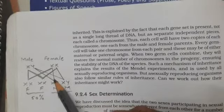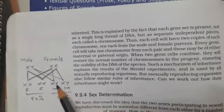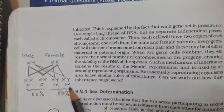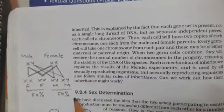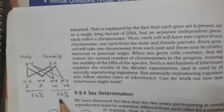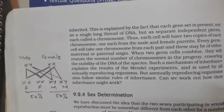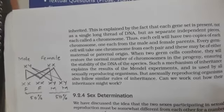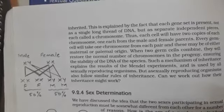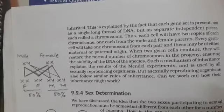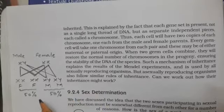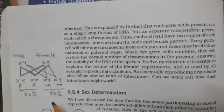If a Y chromosome is donated by the male and an X chromosome is donated by the female, it becomes X and Y — that makes a male child. So the chances of the upcoming child being female or male is 50-50 percent. This shows that the sex ratio can be 50 percent male and 50 percent female, meaning approximately out of 1000 children born, 500 can be male and 500 female.